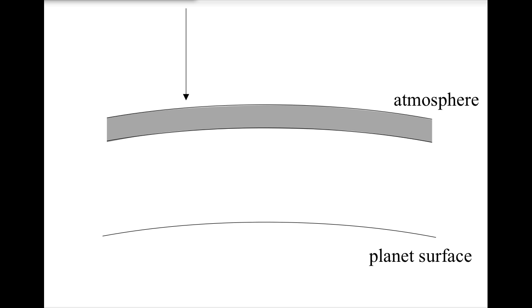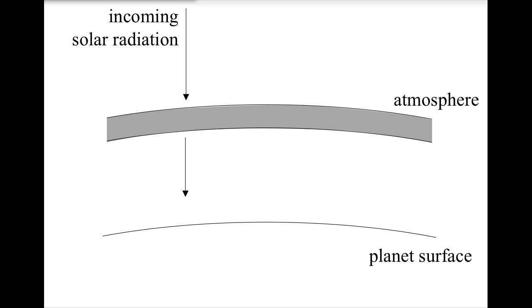Now let's take a more complicated case where there's a surface and an atmosphere. So, solar radiation comes in, but some of that is transmitted, and the rest is reflected off the atmosphere. The surface, again, emits radiation.